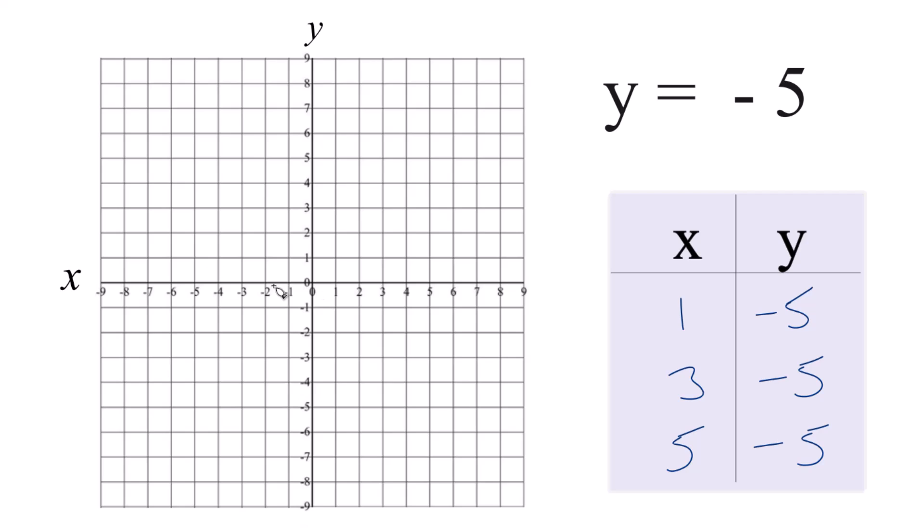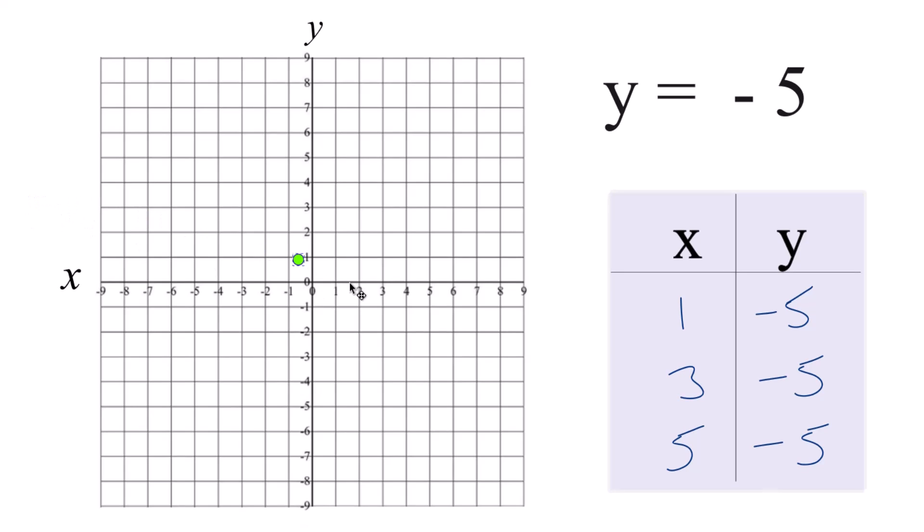So we can plot these points here. We could say x is 1, y is negative 5. x is 3, y is negative 5. x is 5, y is negative 5.